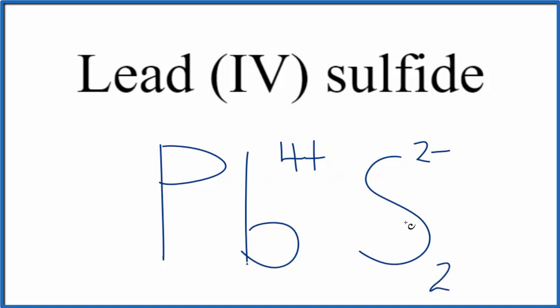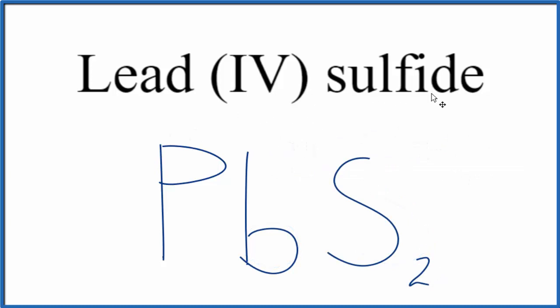If we had two of these sulfide ions, 2 times 2-, that's 4-, that would balance out the 4+. So this is the formula for lead-4-sulfide, PbS2.